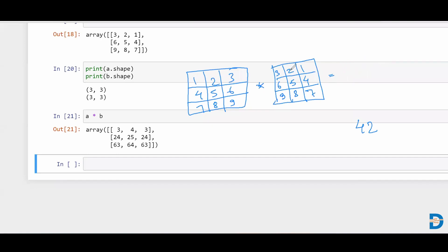So one multiplied by two is two plus two multiplied by five is 10 and three multiplied by eight is 24. So the result is 36. So you write 36 over here.